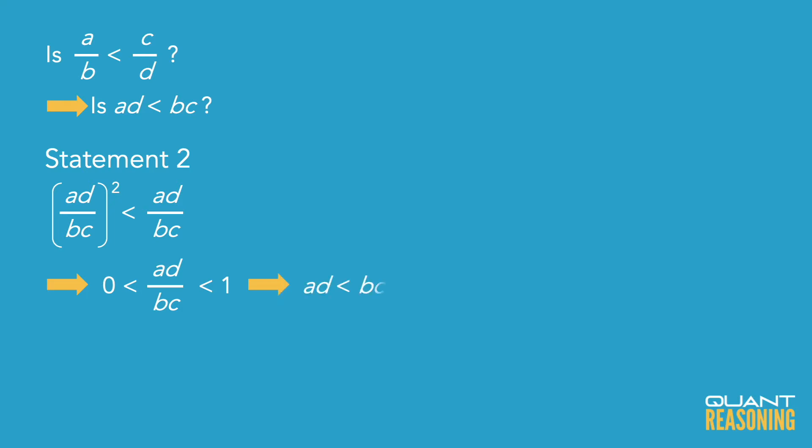We rephrased the question as, is AD less than BC? And statement two gives us a definitive yes. So let's go ahead and eliminate the answer choices that claim that statement two is not sufficient on its own. So A, C, E are all gone. We're down to B and D. Let's evaluate statement one right after the intro.